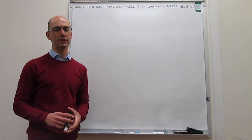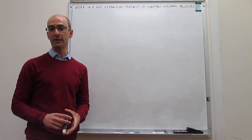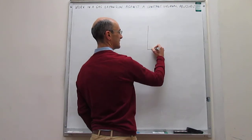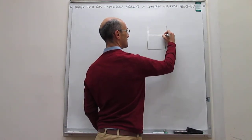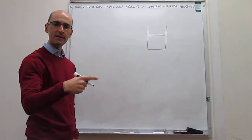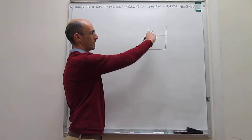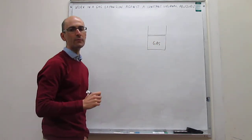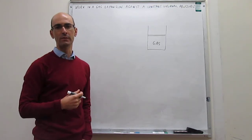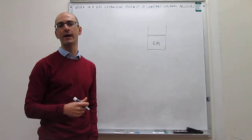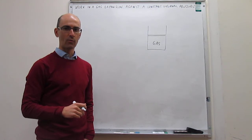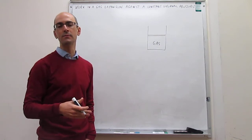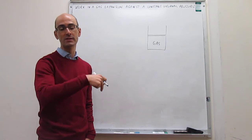The model we're going to be using to start talking about work is a gas expansion against a constant external pressure. We're going to have a gas inside a cylinder fitted with a movable piston that can go up and down without any friction with the walls. Inside this cylinder, we have a gas that we can manipulate — we can elevate its temperature, cool it down, or do some chemical reaction that generates more gas. This might end up moving the pressure of that gas, meaning the gas can push out the piston or the piston pushes down on the gas.